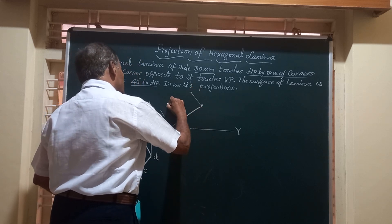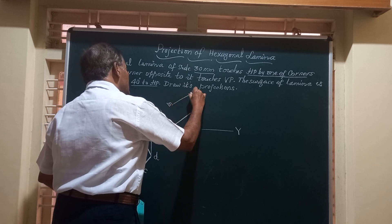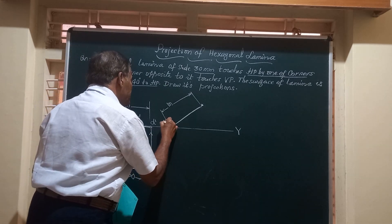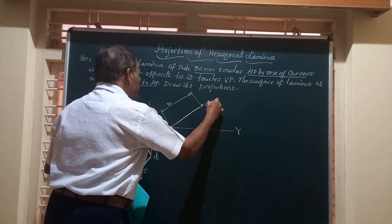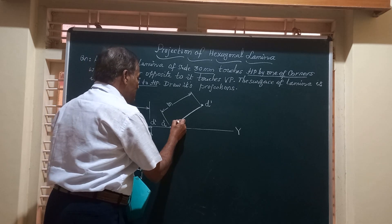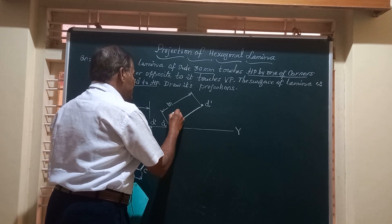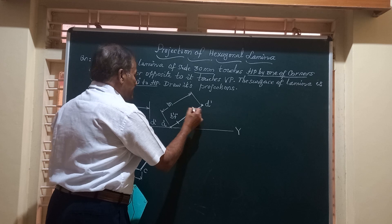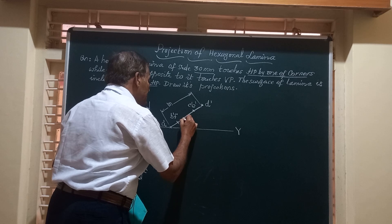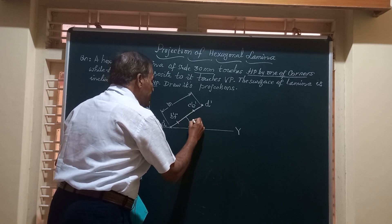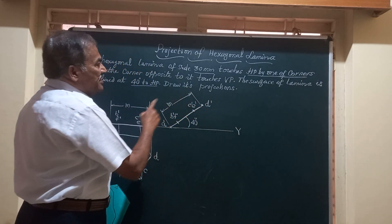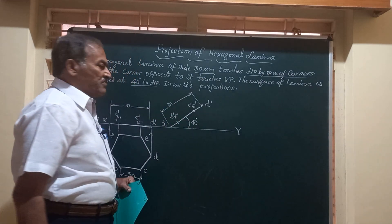This redrawn line has length M — the same as before. Point A-dash is at one end and D-dash at the opposite end. We transfer the intermediate points: B-dash/F-dash and C-dash/E-dash by taking measurements from the original line. This angle of 40 degrees means the surface of the lamina is making 40 degrees with HP.